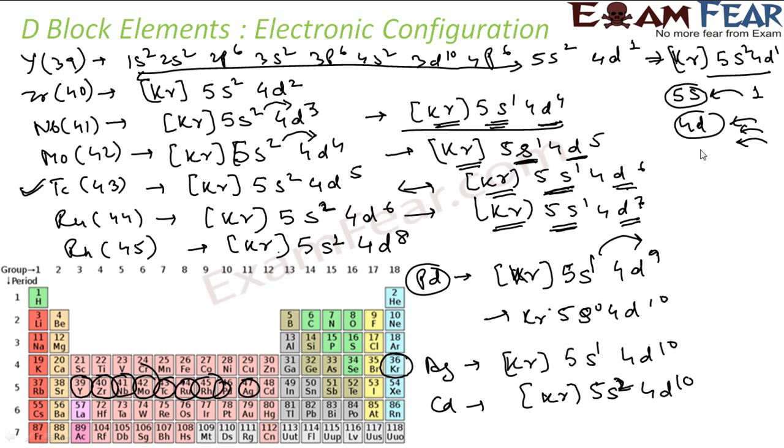Correct. Please note, this is how you fill the 5s and 4d orbital, right? In this case, zirconium, we have 5s1, 5s2 and 4d3, 2 actually. But some people say it is also 5s1 and 4d3.